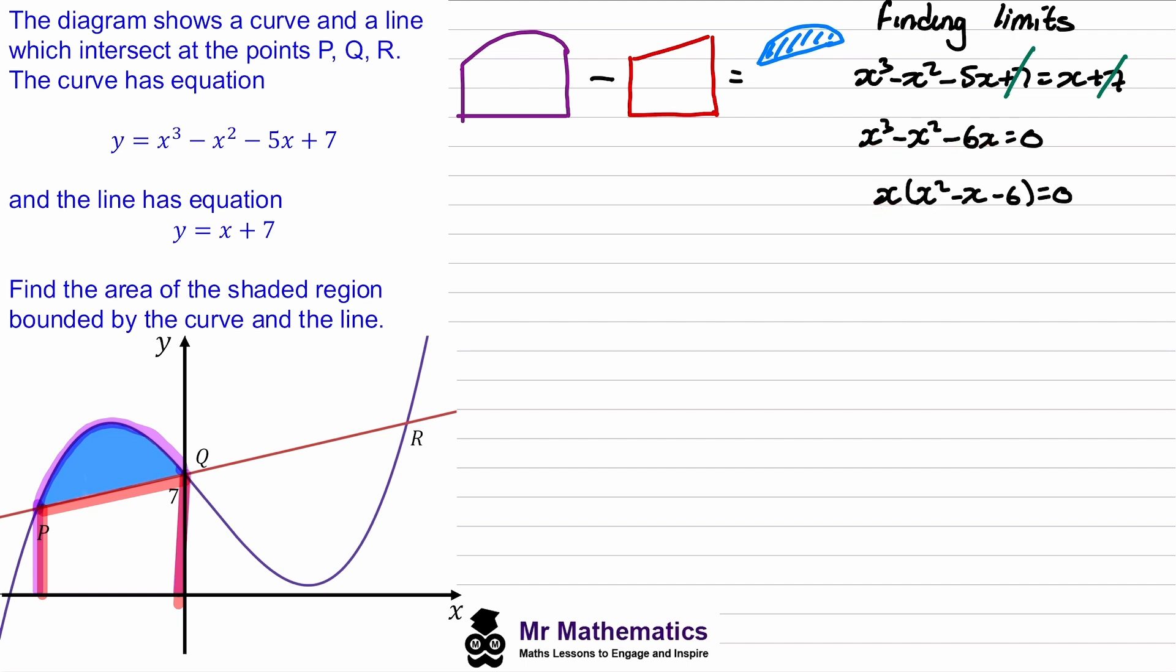We know when x is zero we get this point at seven, so we need to factorize this quadratic so x will equal three and negative two. We can see the three will be at R, so the negative two will be at P.